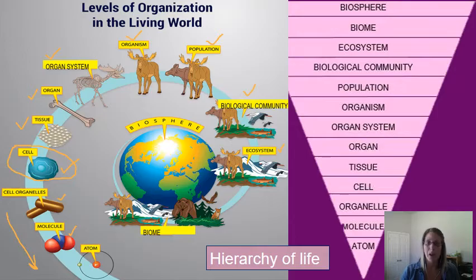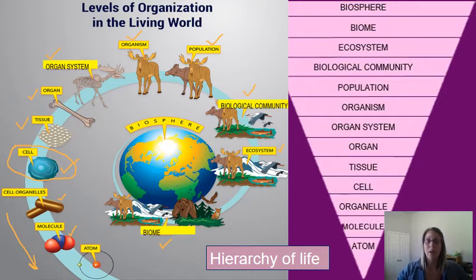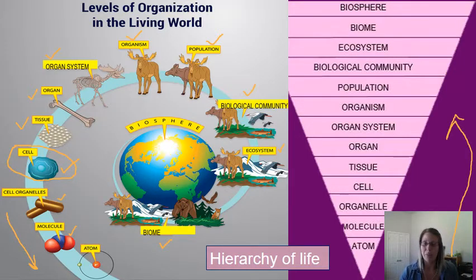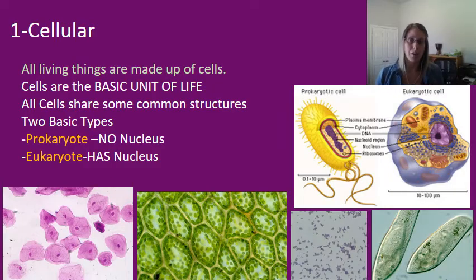A biome is something like the Sahara Desert — there's a similar climate throughout that entire area, and because of that we see similar types of organisms. There may be sub-ecosystems within it, but that climate similarity defines the biome. Then we have the biosphere, which is basically all the area on Earth that supports life. Make sure you know and love this hierarchy of life, and note that life does not begin until you get to the cell level.